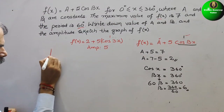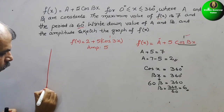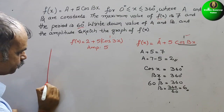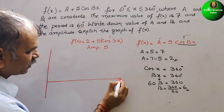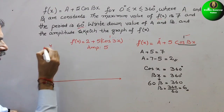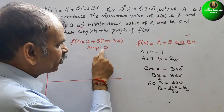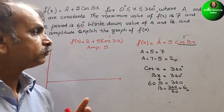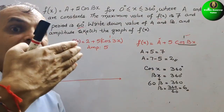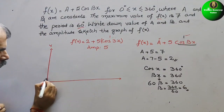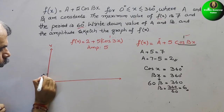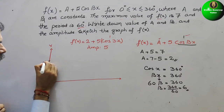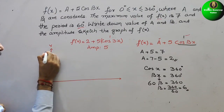Now they ask us to sketch the graph. We draw the x-axis and y-axis. The amplitude is 5, and with the vertical shift of +2, the maximum will be 7 and the minimum will be -3. On the y-axis we mark values: 1, 2, 3, 4, 5, 6, and 7.